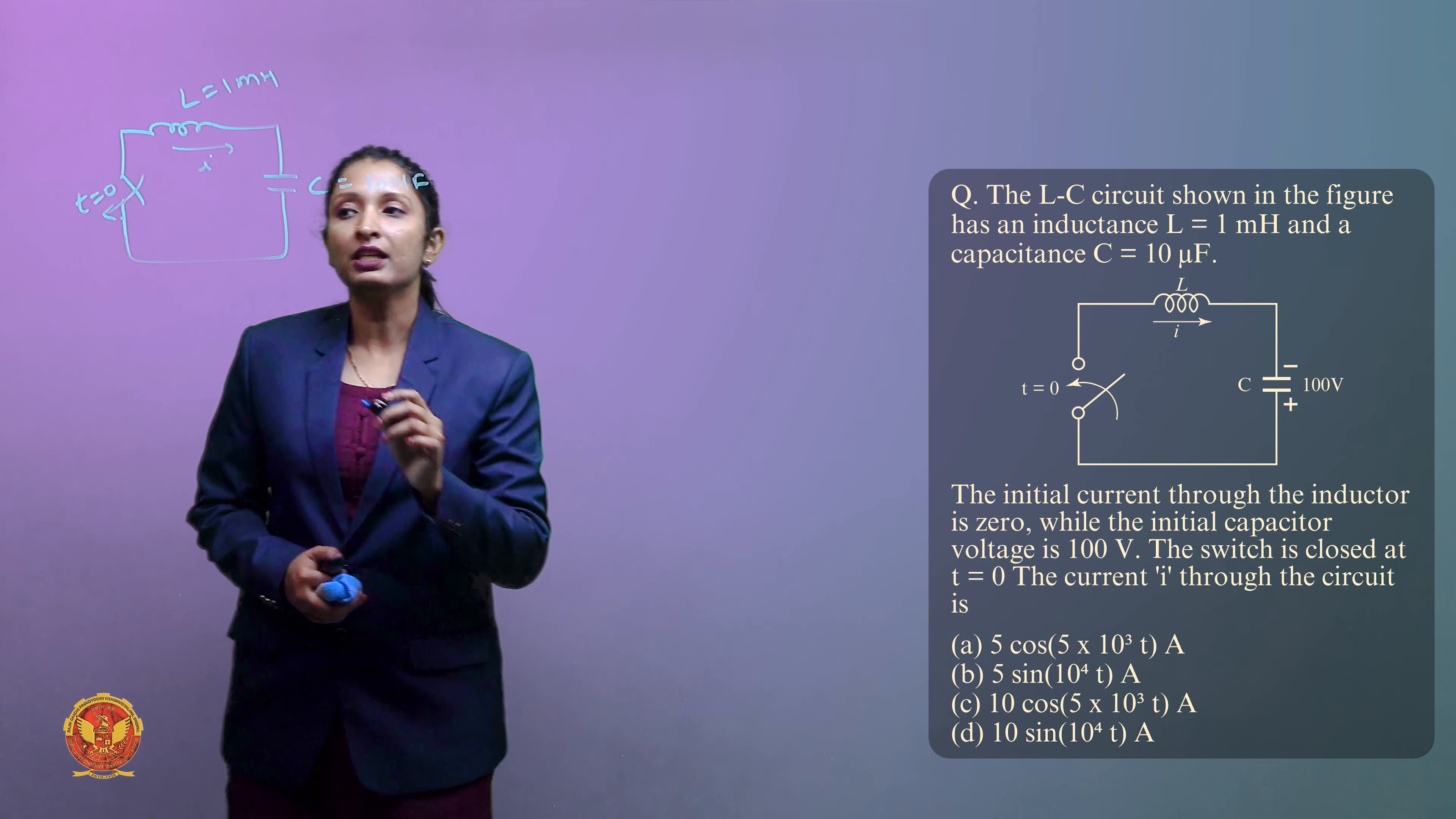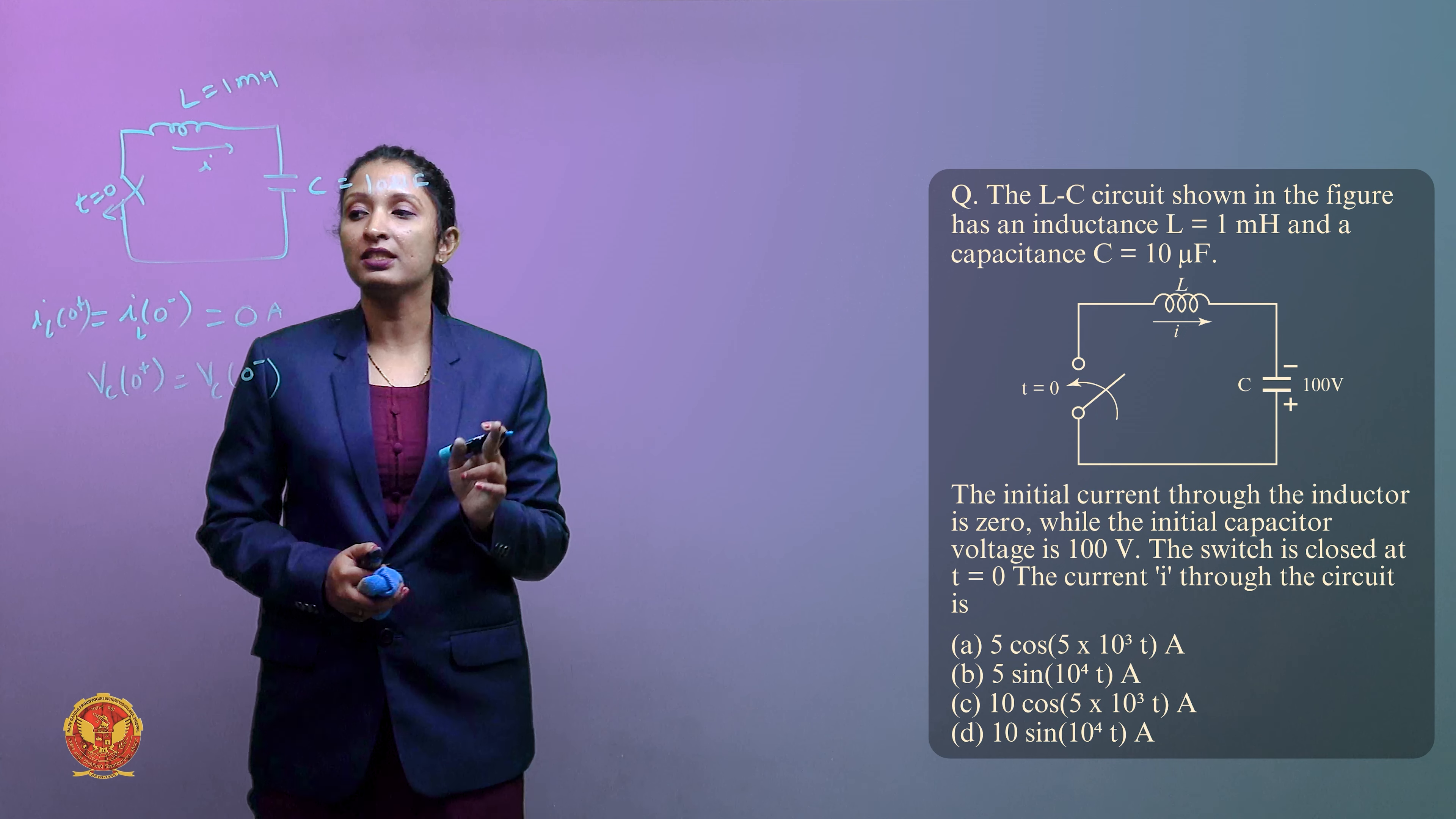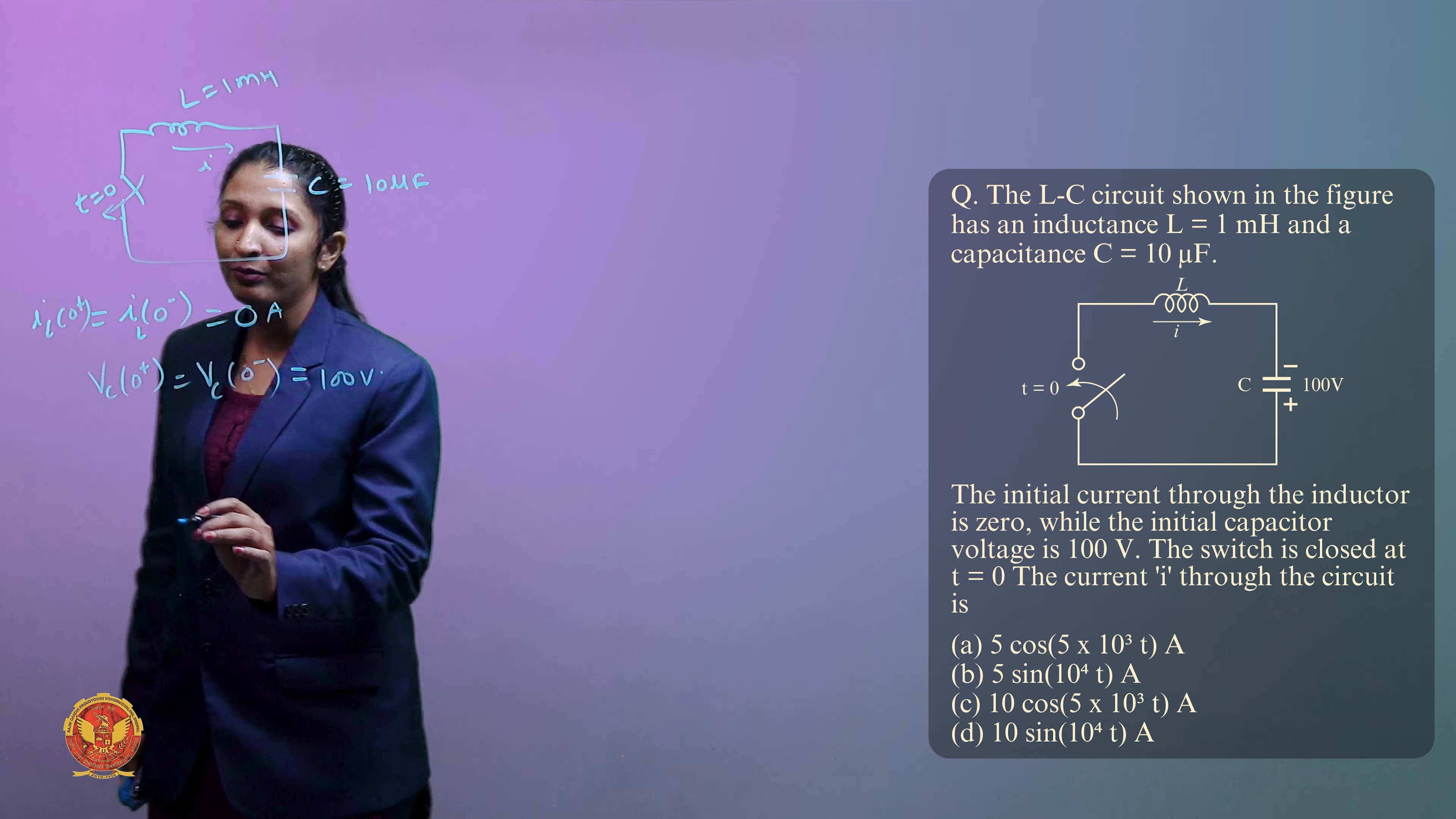We know that the initial current through the inductor I(0-) = 0, and I(0+) = I(0-) = 0 amperes because inductor opposes instantaneous current change. Similarly Vc(0+) will be equal to Vc(0-) = 100V because capacitor opposes instantaneous voltage change. Now when switch is closed, we transform to Laplace domain.